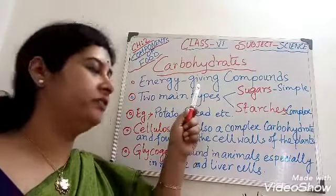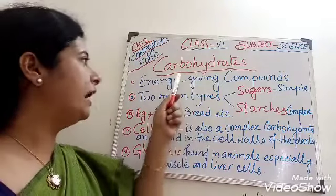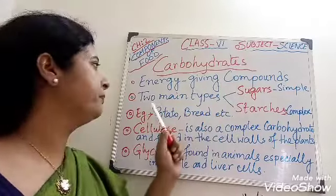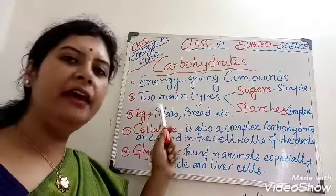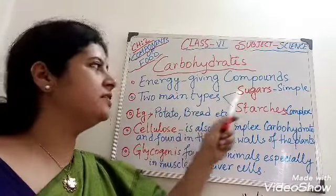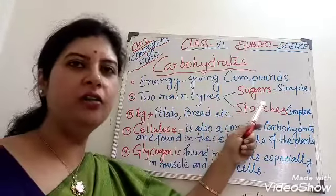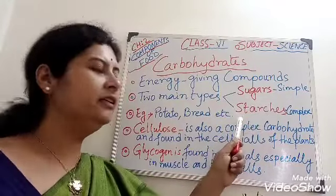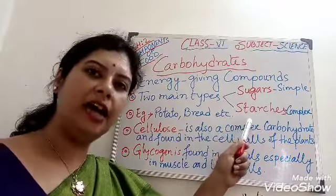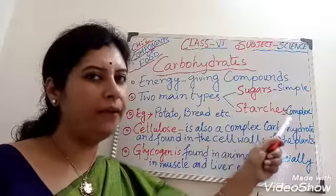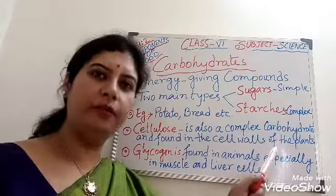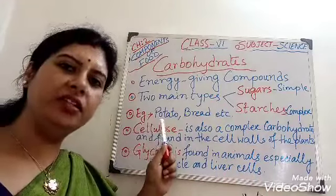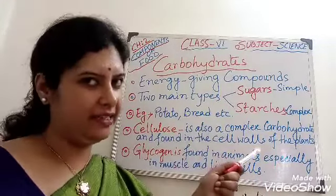First, carbohydrates. Carbohydrates are energy-giving compounds. They are mainly of two types: one is sugar, also known as simple carbohydrate; the other is starch, also known as complex carbohydrate. Examples are potato, bread, wheat, etc.